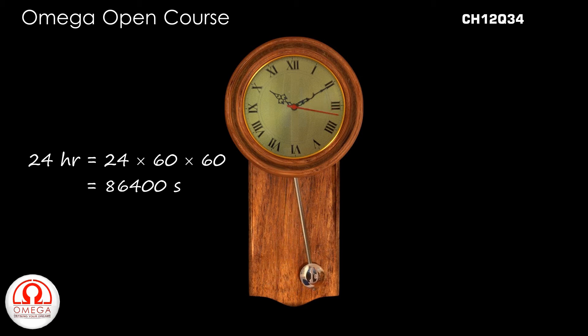Since the pendulum takes 2.04 seconds for one oscillation, total number of oscillations in 24 hours is equal to 86400 divided by 2.04 or 42353.